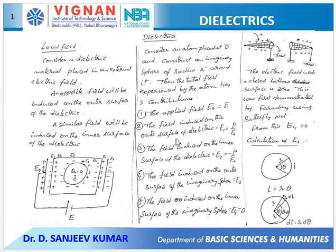The second contribution is the field induced on the outer surface of the dielectric, which is P by ε₀. The field induced on the inner surface of the dielectric is minus P by ε₀ — equal and opposite to the second one. The third contribution is the field on the outer surface of the imaginary sphere, called E3, which I have to calculate. The fourth contribution, the field on the inner surface of the imaginary sphere, becomes zero because the field inside any closed surface is zero.